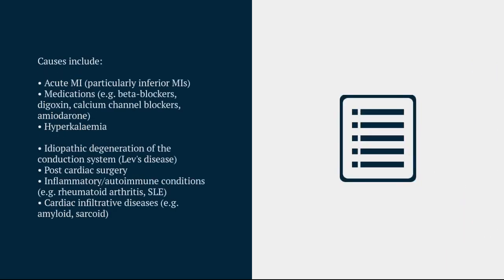Moving on to talk about some causes — there are lots of different types, but the key ones acutely include MI, particularly an inferior MI, which can cause any AV block. Medications are important causes, particularly the antiarrhythmic drugs: beta blockers, calcium channel blockers, amiodarone and digoxin. Hyperkalemia is a potentially reversible cause, and then there are some less common causes.